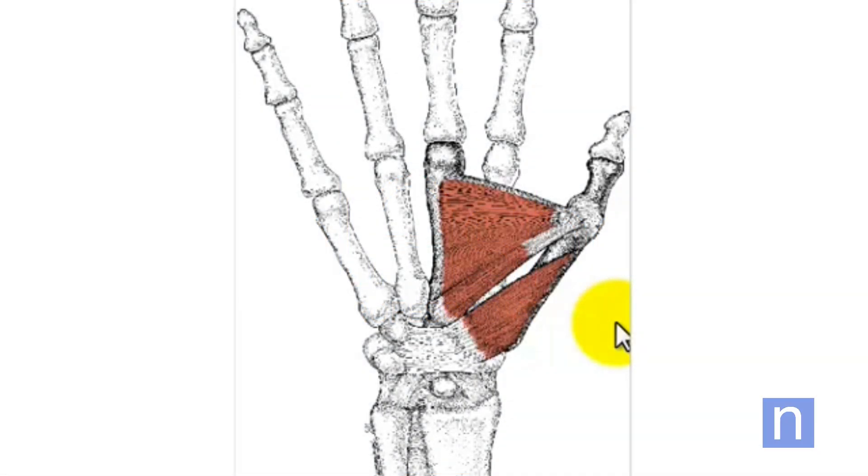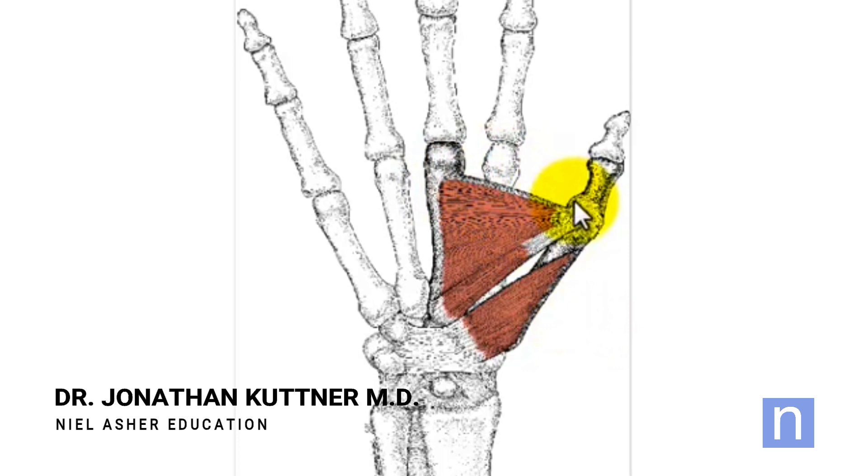We now come to the thenar eminence, which is the bump that you have on your palm which overlies your thumb. This is made up of two muscles, and these muscles are actually really important, one of them in particular.